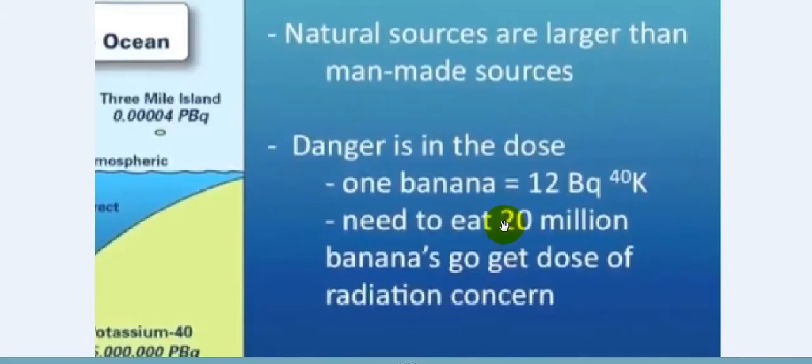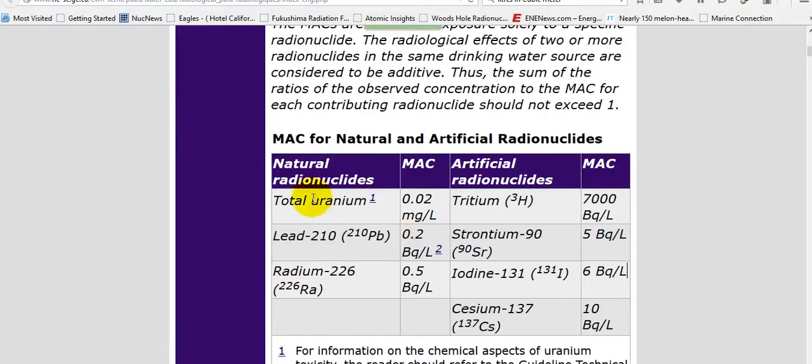They'll tell you there's more natural sources that are larger than man-made sources. No, they're not. See the natural radionuclides, lead, radium is 0.5 becquerels a liter. These artificial ones are 10 becquerels a liter, 6 becquerels, 5 becquerels. 7,000 becquerels a liter man-made versus all of them still don't even have a comparison.